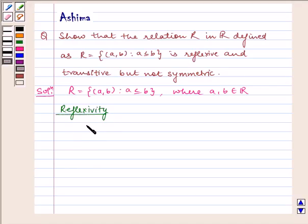For any element a belongs to R, we have a is less than or equal to a. Therefore, (a,a) belongs to R for all a belongs to R. Therefore, R is reflexive.